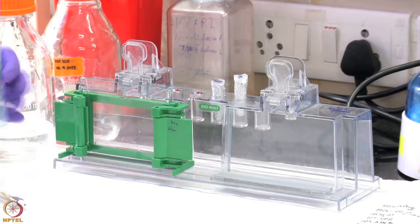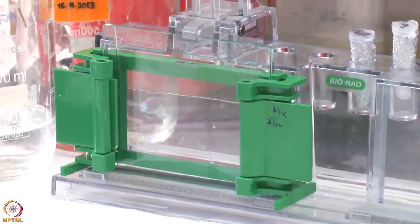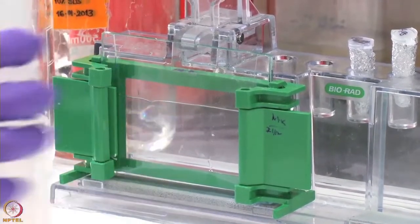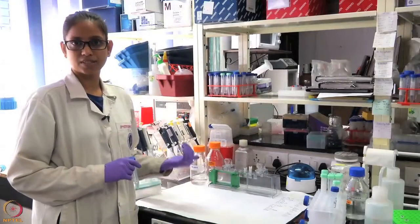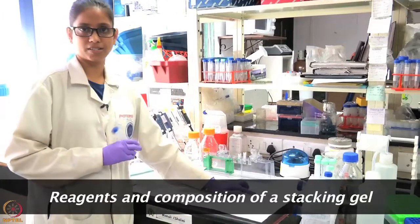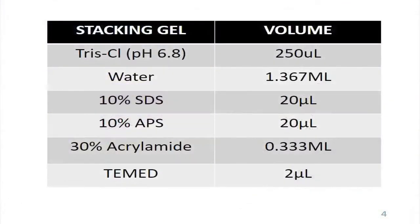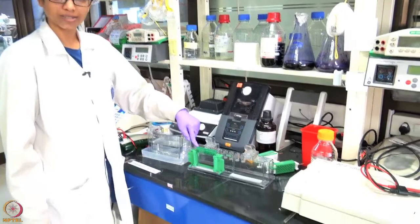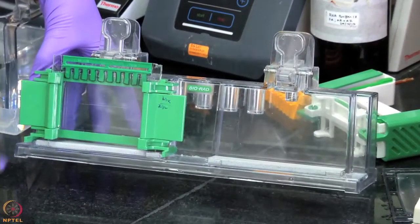Fill the gel up to the indicated level, then add isopropanol to remove any bubbles present up to the green line. While the resolving gel solidifies, start making the stacking gel. The stacking gel composition is the same as the resolving gel except the Tris-HCl solution used is pH 6.8, unlike the resolving gel where it was pH 8.8. Once the gel is cast, the comb is placed. For easier visibility, mark the wells formed by the comb.